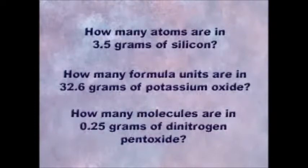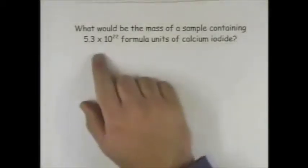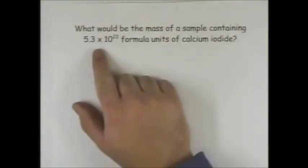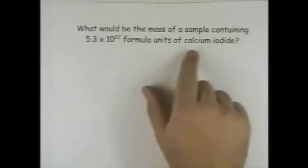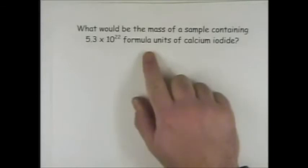Let the units guide you and you will do just fine. Now we just want to try one more thing. I think the way to go is to jump in and try a problem. What would be the mass of a sample containing 5.3 times 10 to the 22nd formula units of calcium iodide? Think about it — this is really just the same thing in reverse. We'll let the units guide us and it'll be easy.